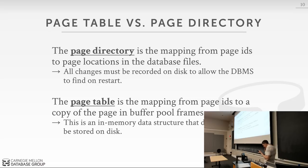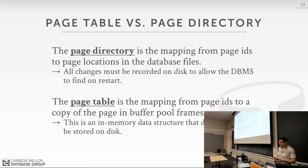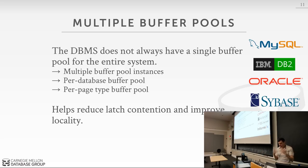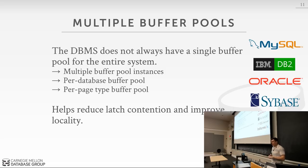Any time we access the page table we must take a latch, but this becomes a contention point when many threads try to access it simultaneously. One way to alleviate this is to have multiple buffer pools. A query for a given page ID can be hashed to a specific buffer pool instance, and each instance has its own page table and memory region. This partitions the workload across multiple buffer pool instances so that everyone isn't trying to acquire the same latches at the same time.